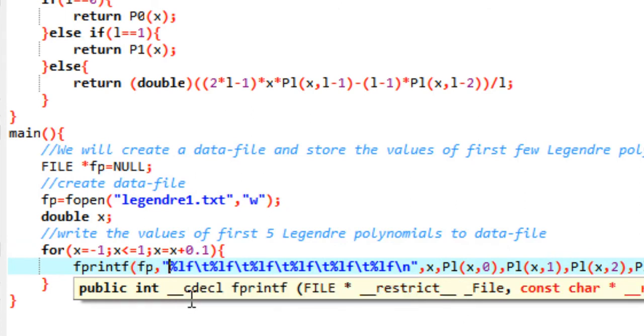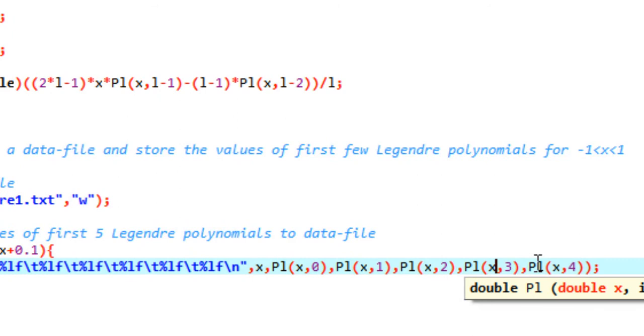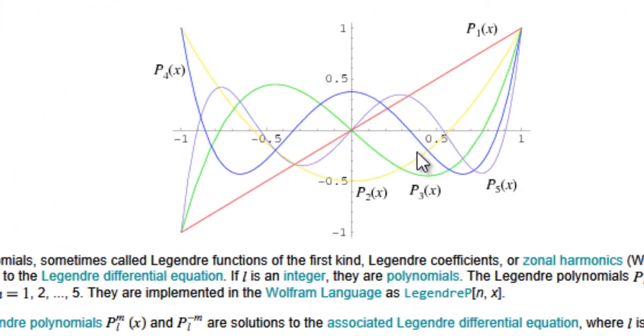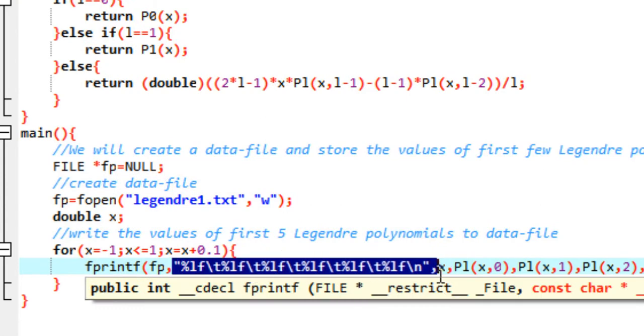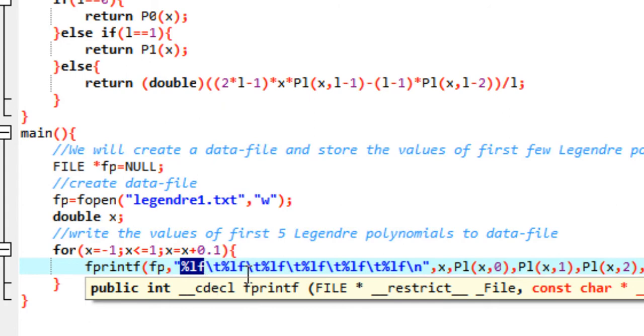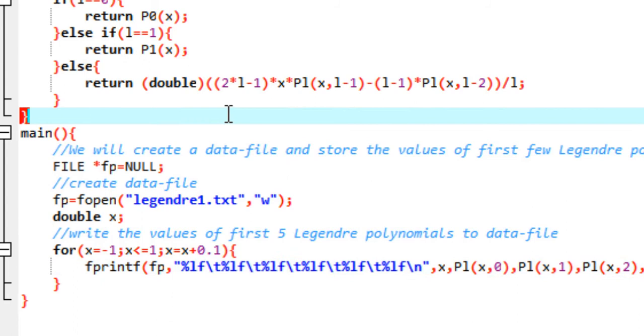We start a loop where x goes from minus 1 to 1 in small steps of 0.1, and then we use fprintf to print the values to the file with the file pointer fp. We have 1, 2, 3, 4, 5, 6 columns for x, P0 of x, P1 of x, P2 of x, P3 of x, and P4 of x. We will be printing the 0 to 4 Legendre polynomials. Percent lf denotes that we will be using a double, and slash t is to create a tab space. We use backslash n to go to the next line.